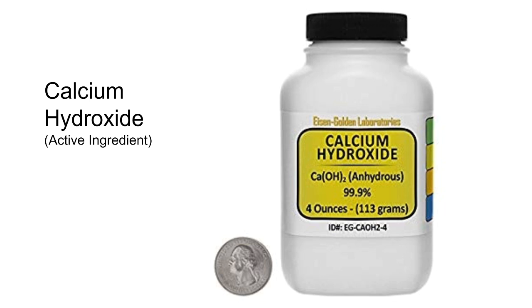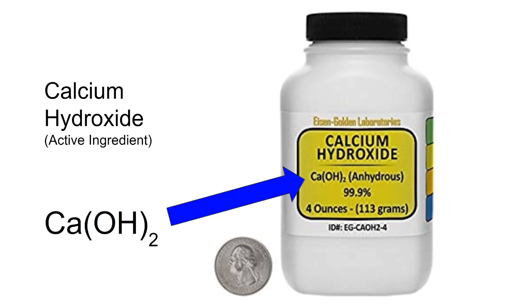What is the chemical reaction for calcium hydroxide? It's Ca(OH)₂. It's made of one calcium atom, two oxygen atoms, and two hydrogen atoms.